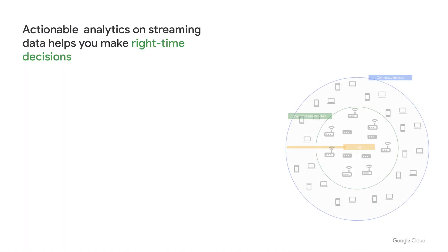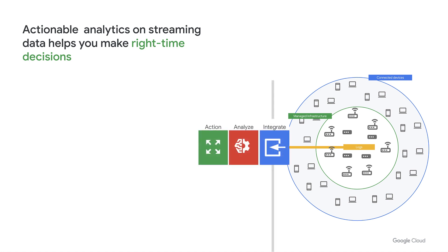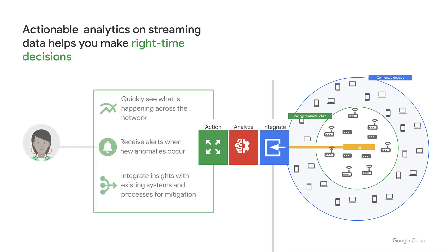Many companies are dealing with the proliferation of data and difficulty in making sense of that data at the speed required to make it useful. This solution aims at sifting through the mass of data to the events that need additional attention — those outliers that indicate that something is not going as expected.